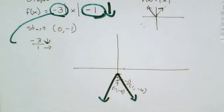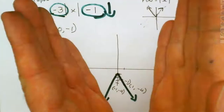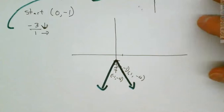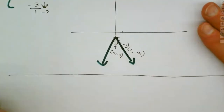We connect them with a straight line since these are absolute values — it needs to make a V. To get the other half, we do the opposite: down 3, back 1, giving the point minus 1, minus 4. That makes the V. The minus 1 on the end moved the graph down; the minus 3 flipped it upside down and also made it more narrow.